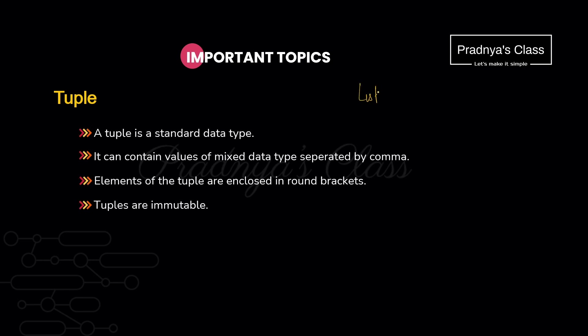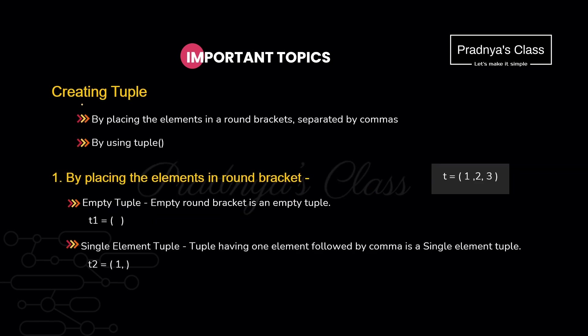Tuple is just like list — it provides mixed data type separated by comma. But what's the difference? The elements are enclosed in round brackets. And here is the most important property of the tuple: tuple is immutable. We cannot change the content of the tuple in place.